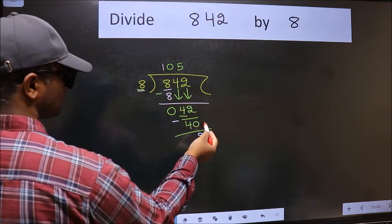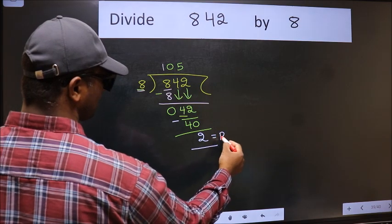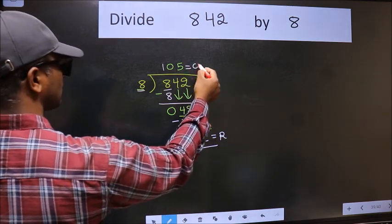No more numbers to bring it down. So we stop here. This is our remainder and this is our quotient.